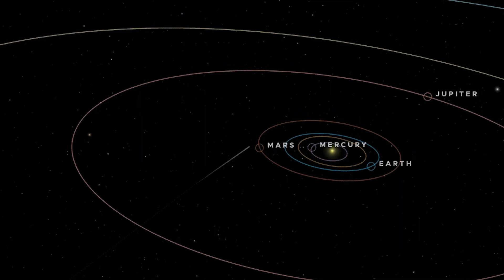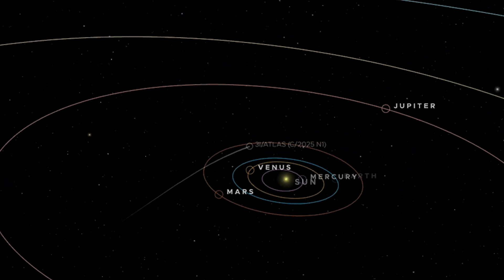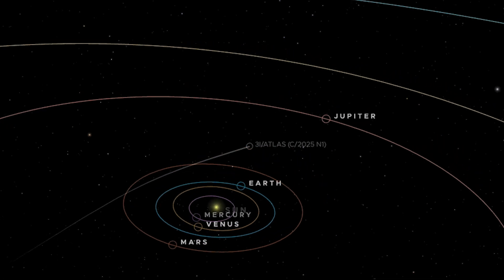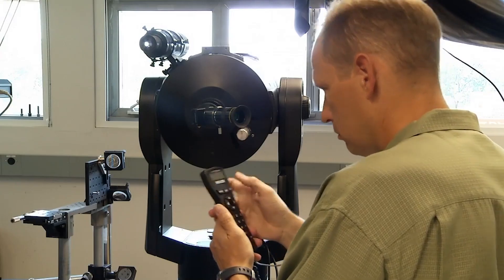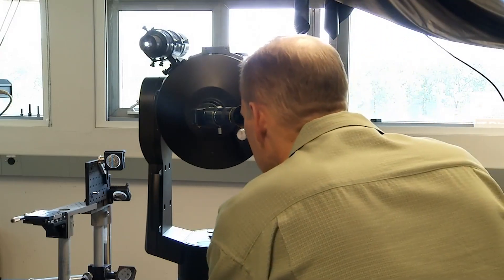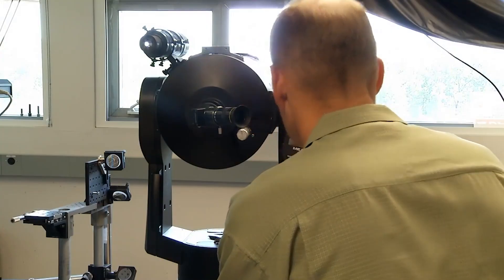An event like 3I Atlas, an unannounced guest from interstellar space, throws a massive wrench into that predictability. You see, for decades, space agencies have focused heavily on tracking human-made space debris, and it's a huge problem.